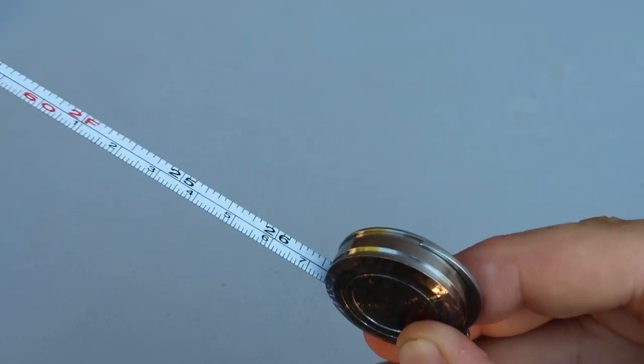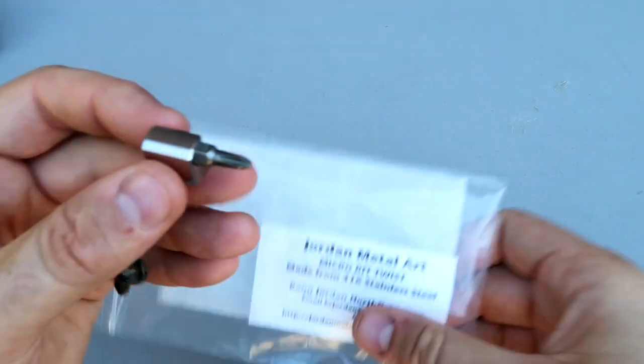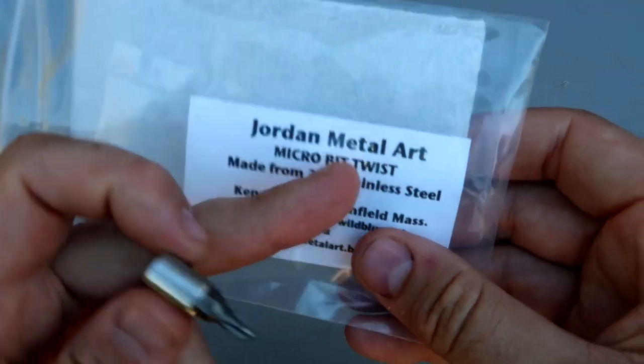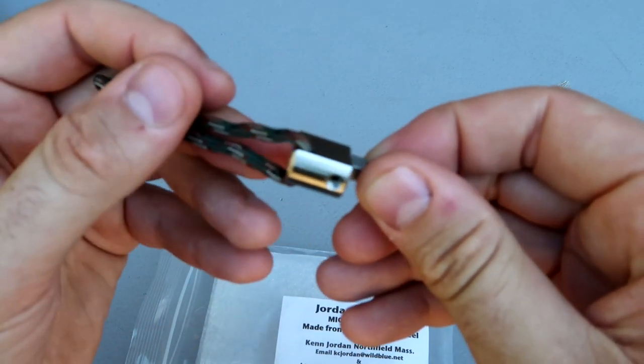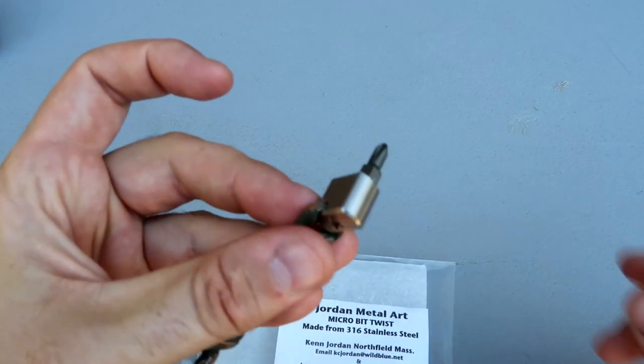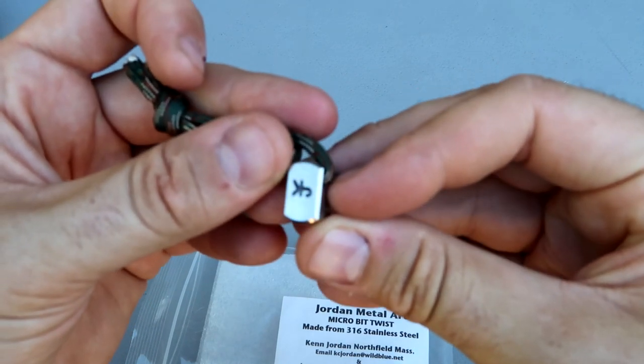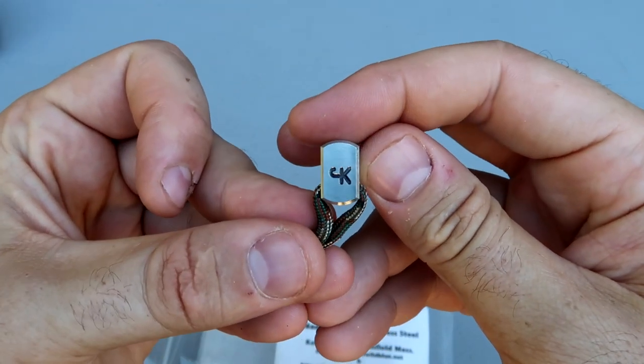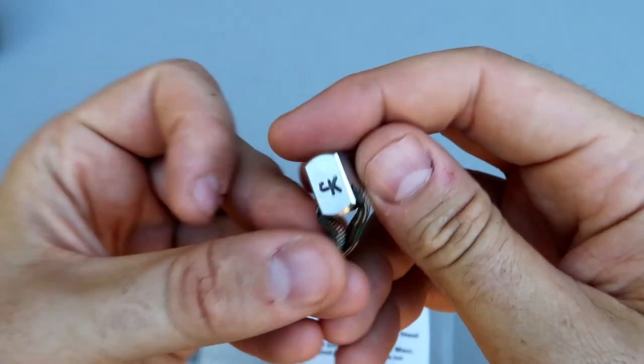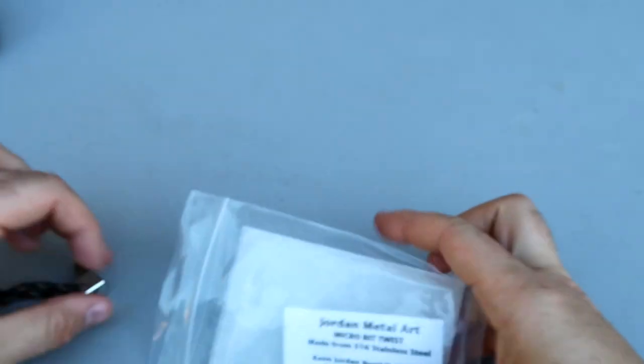Next I got it here at Arizona custom knives, Jordan metal art macro beat twist. So this is cool. Look how tiny screwdriver that is, perfect for a keychain, feels good, looks stylish. There's I guess JK, oh J and K. Now I see the logo.